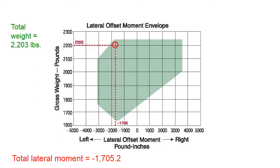Likewise, we will check the lateral center of gravity chart to ensure we have remained within the approved lateral CG range. We need the total moment from our lateral item weight moment chart, as well as the total weight. We travel along the bottom of the chart to our total moment of negative 1,705 inch pounds and draw a line straight up. Then we travel up the left side to our total weight of 2,203 pounds and draw a line straight across. Where those two lines intersect — if it falls within the shaded portion — we are within our lateral CG range.